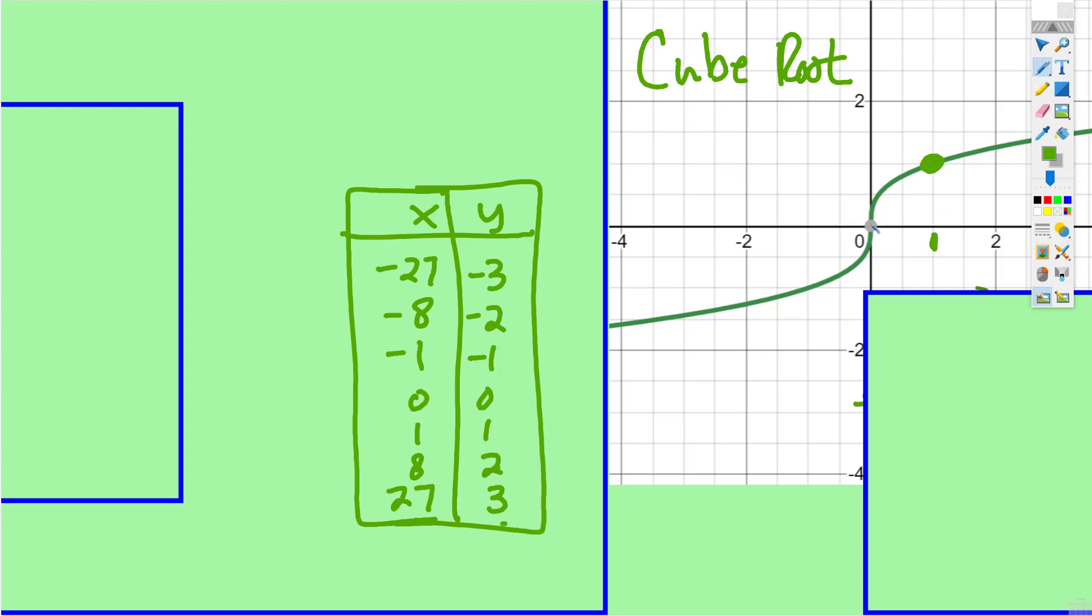The cube root of 0 is 0, the cube root of negative 1 is negative 1, and then the cube root of negative 8 is negative 2, cube root of negative 27 is negative 3.